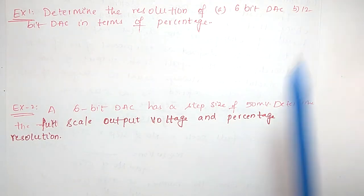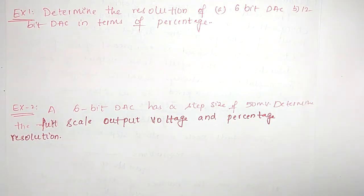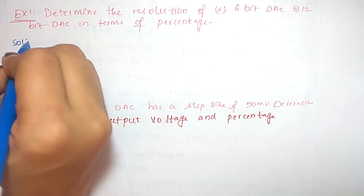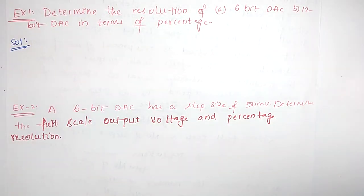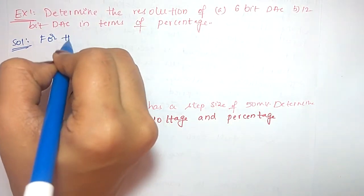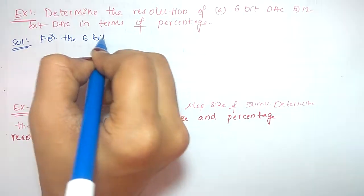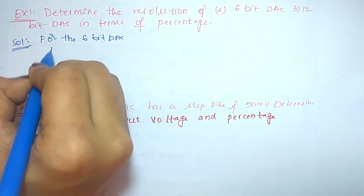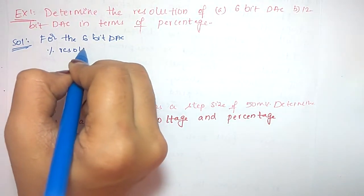Hi students, in this session we are going to solve few problems based on resolution, step size, and full scale value concepts. Let's see the first question: determine the resolution of a 6-bit DAC and a 12-bit DAC in terms of percentage. For the 6-bit DAC, the percentage resolution formula is —